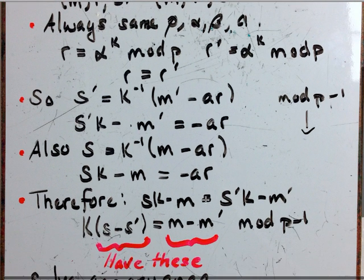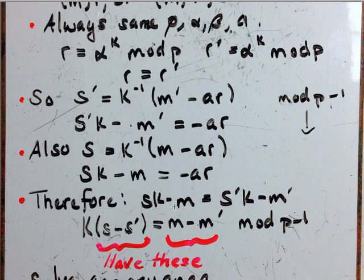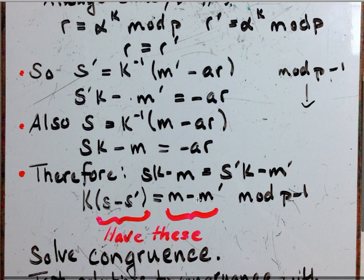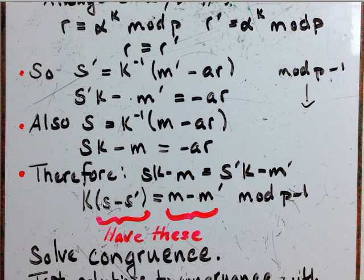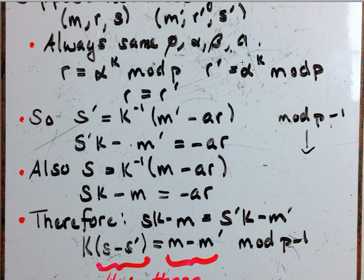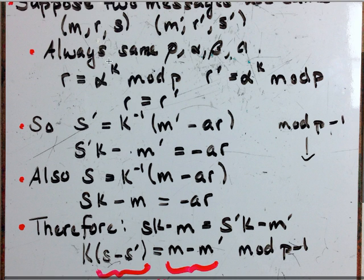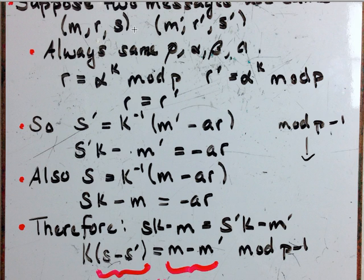Therefore, we can set these two equal to each other. S K minus M equals S prime K minus M prime. And I just rearranged a little bit to say that K times this number equals this number. We have both the S, the S prime, the M, and the M prime because remember that these right here, the messages that are sent, are not private. They're public because the idea is not to hide the message M. The idea is simply to verify or validate the messages.